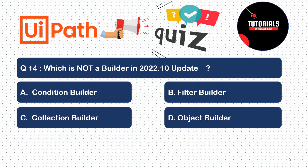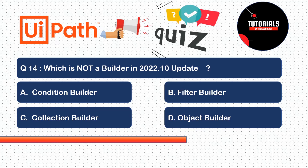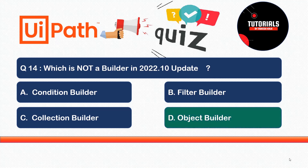Question fourteen - a tricky one: which is NOT a builder in 2022.10? Is it (a) Condition Builder, (b) Filter Builder, (c) Collection Builder, or (d) Object Builder? The correct answer is Object Builder - there is no Object Builder in the 2022.10 update. We have Condition Builder, Filter Builder, and Collection Builder, but not Object Builder.